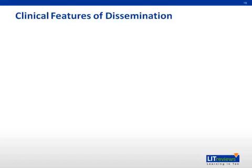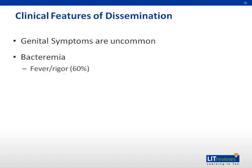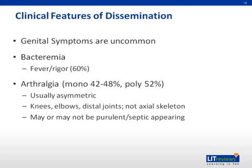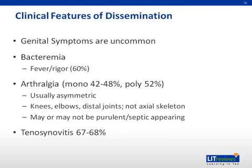Individuals affected with lupus are also susceptible due to alterations in their complement response. Clinically, disseminated gonococcal infection is significantly different from typical gonorrhea. Genitourinary symptoms are actually uncommon. Instead, the most likely symptoms are those typical of bacteremia, such as fevers and rigors, occurring about 60% of the time. Arthralgias are also relatively common, affecting joints of the extremities while sparing the axial skeleton. The affected joints may not have a septic appearance on exam, but this does not exclude infection. Tenosynovitis is also reported in about two-thirds of patients with disseminated infection.